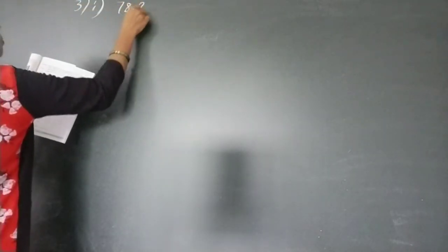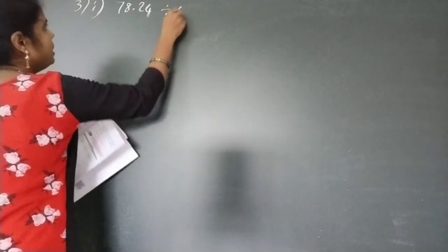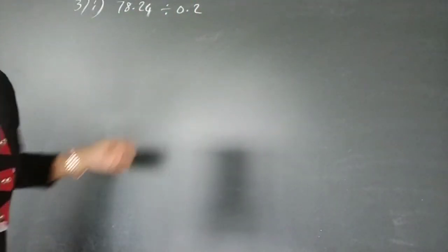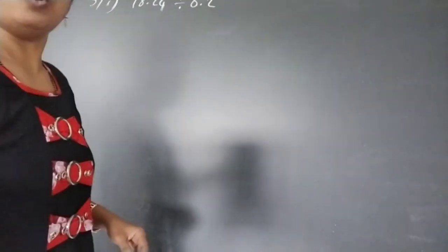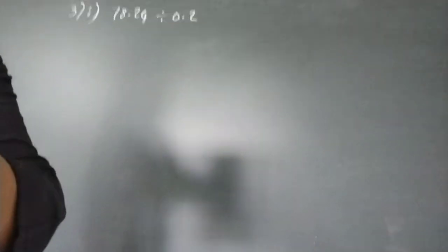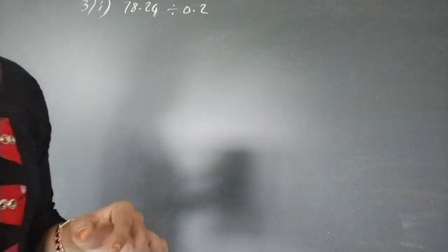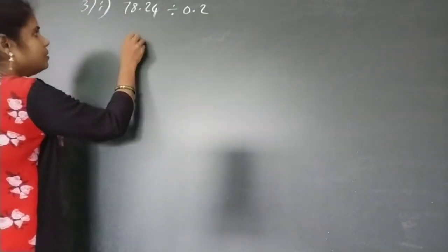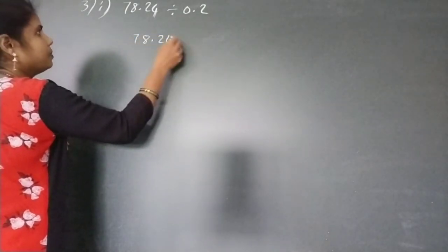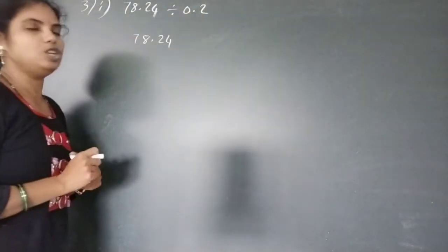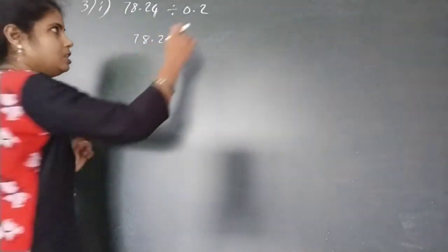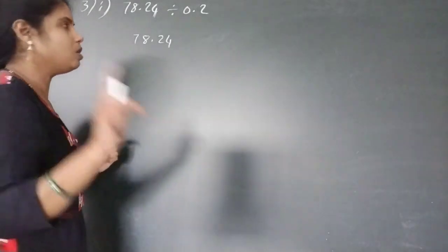The first problem is 78.24 divided by 0.2. Here we are having 2 decimals. So how can you solve this one? We have 78.24. Both are having decimal points. The divisor is 0.2, which has only 1 decimal digit after the point. So we multiply with 10.